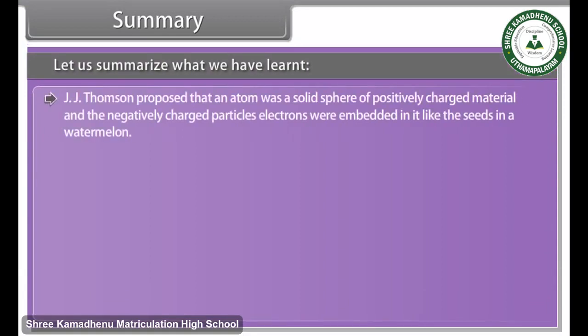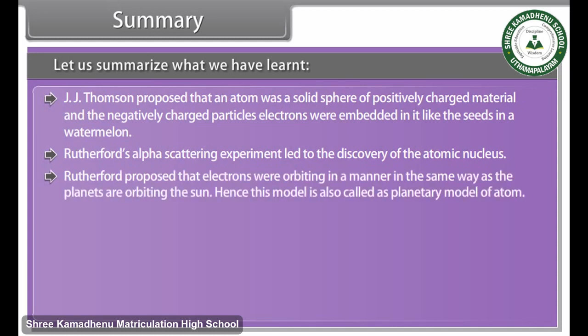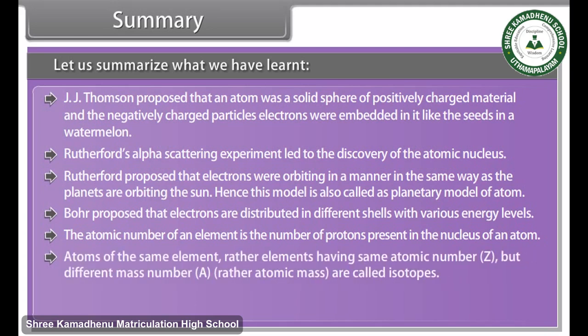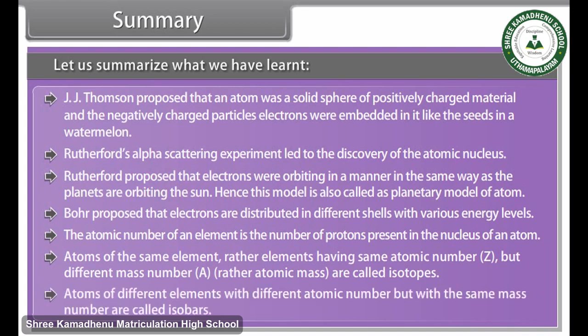Summary. Let us summarize what we have learned. J.J. Thompson proposed that an atom was a solid sphere of positively charged material, and the negatively charged particles' electrons were embedded in it like the seeds in a watermelon. Rutherford's alpha-scattering experiment led to the discovery of the atomic nucleus. Rutherford proposed that electrons were orbiting in a manner in the same way as the planets are orbiting the sun. Hence, this model is also called as planetary model of atom. Bohr proposed that electrons are distributed in different shells with various energy levels. The atomic number of an element is the number of protons present in the nucleus of an atom. Atoms of the same element, rather elements having same atomic number Z, but different mass number A, rather atomic mass, are called isotopes. Atoms of different elements with different atomic number, but with the same mass number, are called isobars.